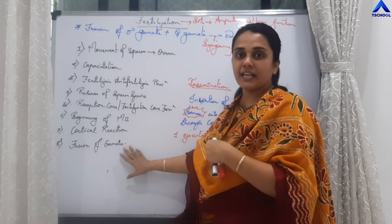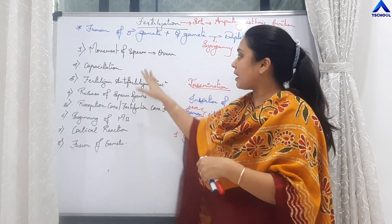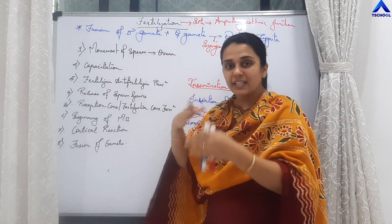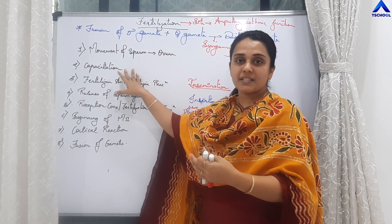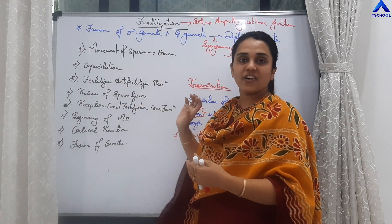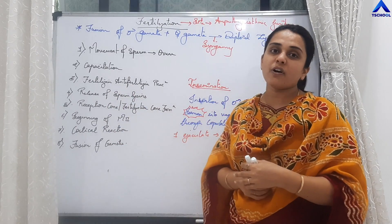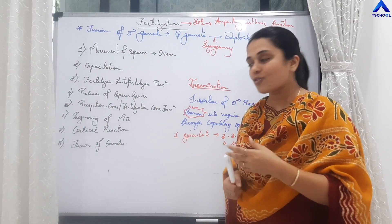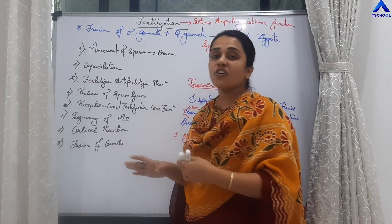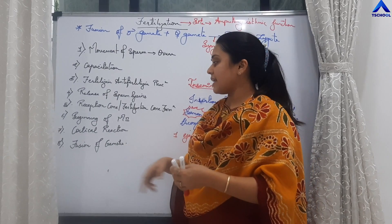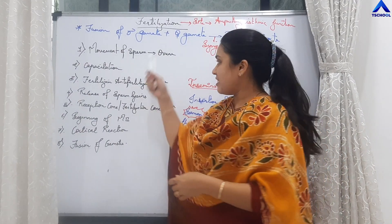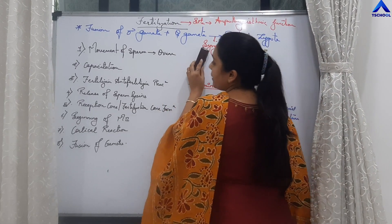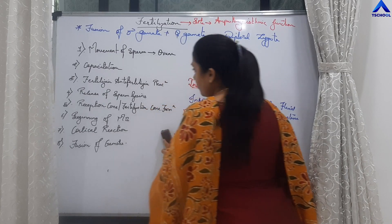The steps of fertilization are: movement of the sperm towards the ovum, capacitation, fertilizin-antifertilizin reaction, release of sperm lysins, formation of the fertilization or reception cone, beginning of meiosis II, cortical reaction, and finally fusion of the gametes. We will study all these steps one by one.